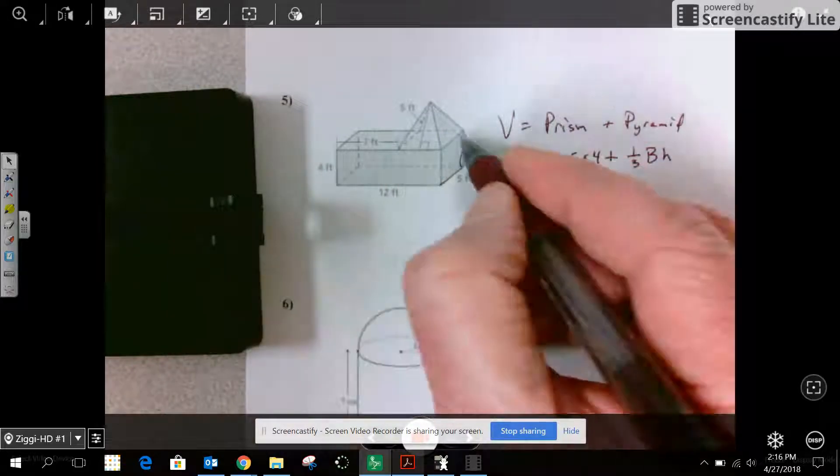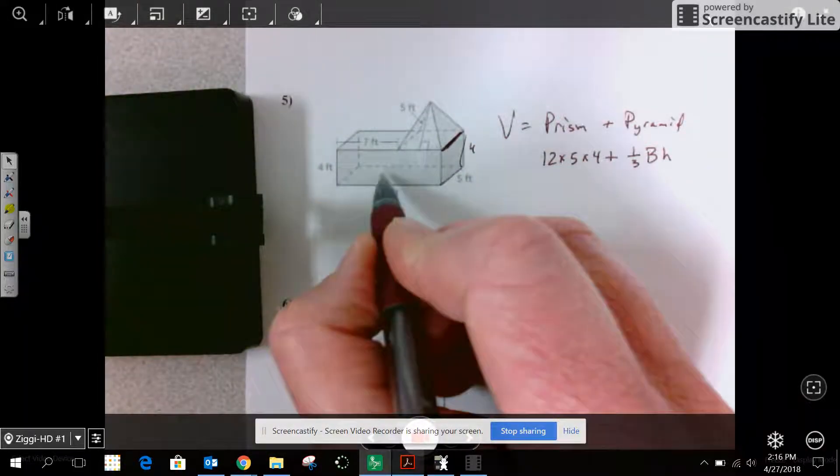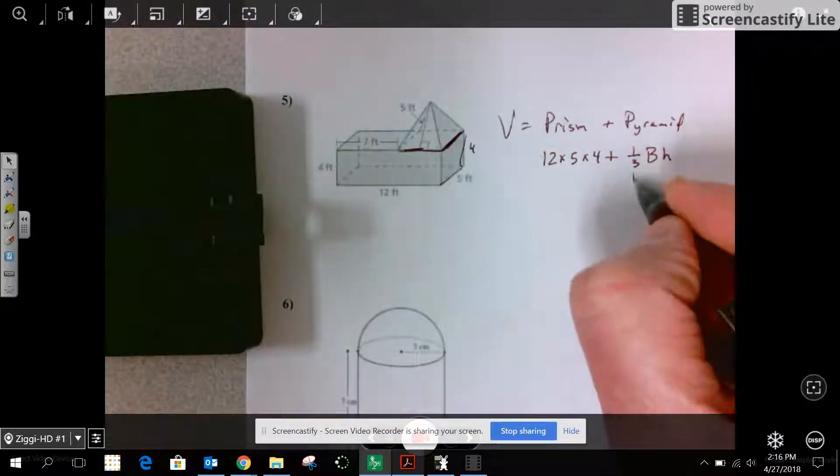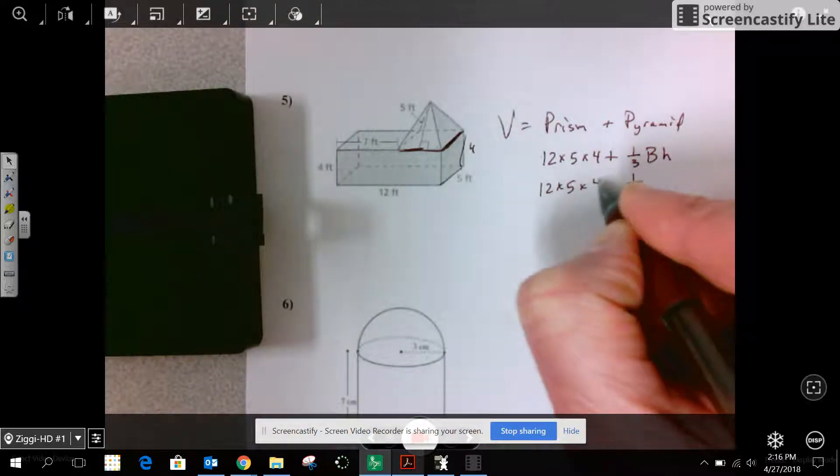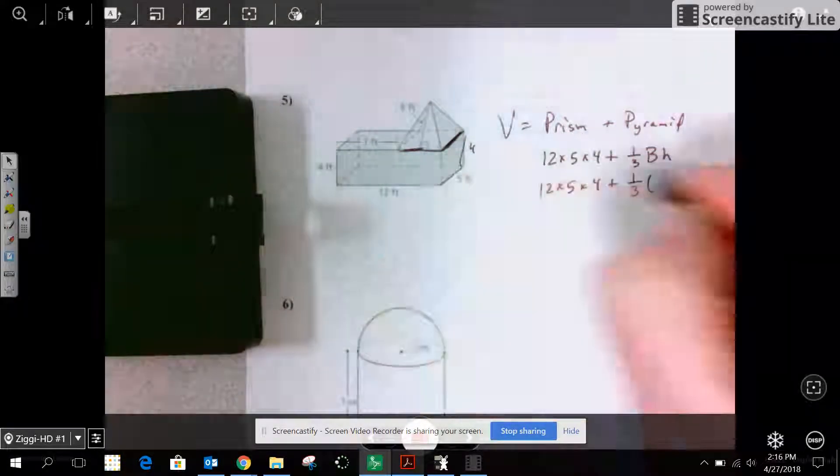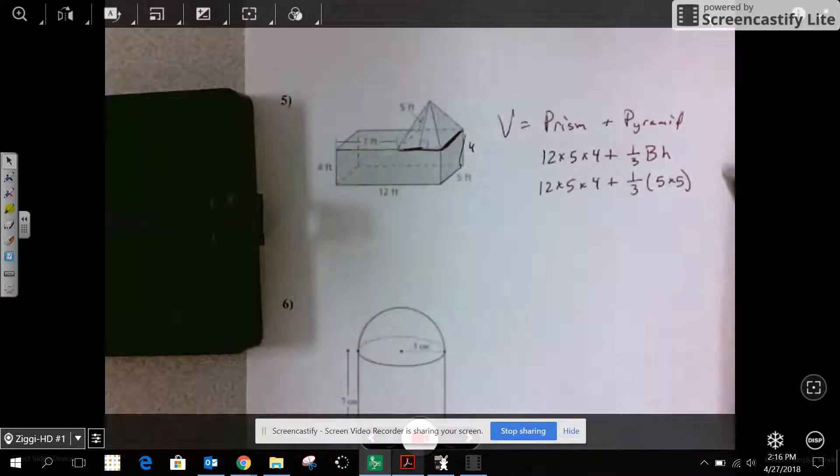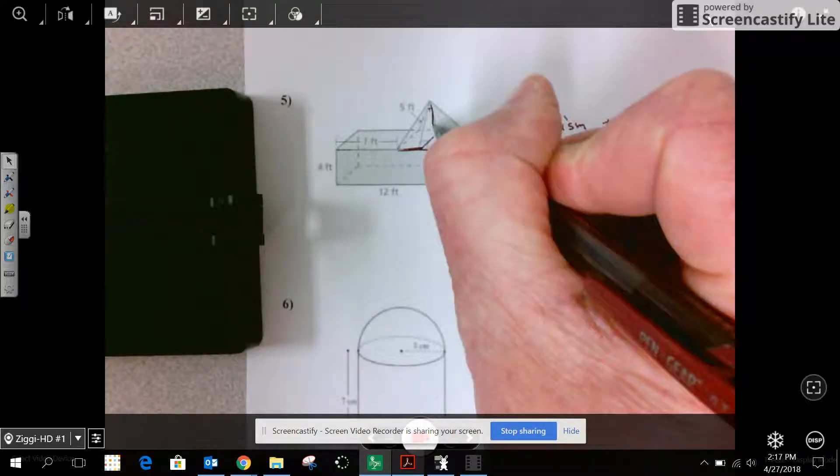Well, the base is 5 this way. And since this is 7, it's 5 this way. So the area of the base is 5 by 5. And the height of the pyramid, we don't know. We have to find it. We know the slant height.